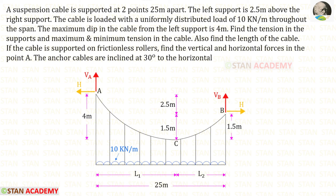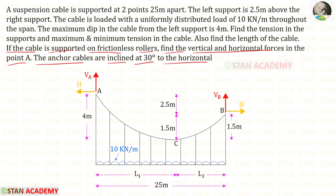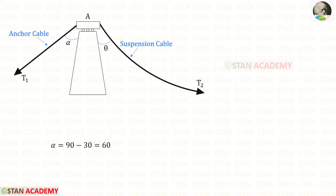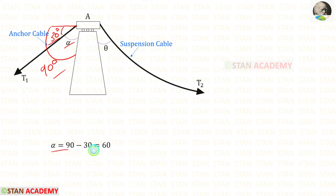Now let us do the last part of the question. If the cable is supported on frictionless rollers, find the vertical and horizontal forces at point A. The anchor cables are inclined at 30 degrees to the horizontal. Since the total angle is 90 degrees, 90 minus 30 gives us alpha = 60 degrees.